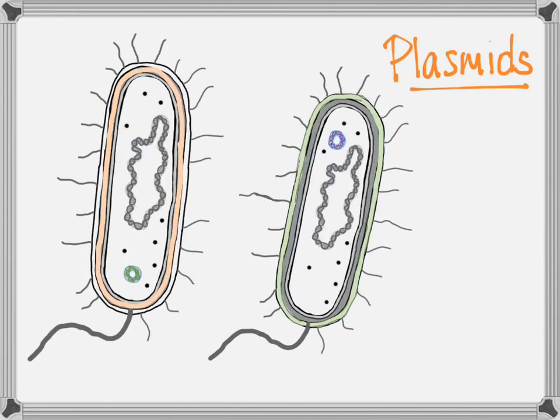But when it comes to bacteria, those mutations in DNA aren't even the whole picture. Remember the plasmids — the little extra pieces of DNA that bacteria have? They're outside the bacterial chromosome.